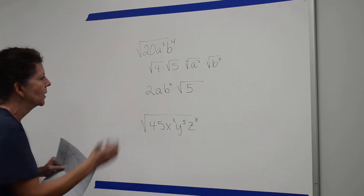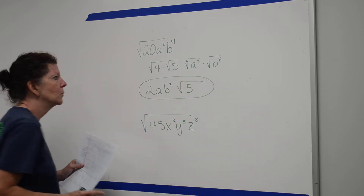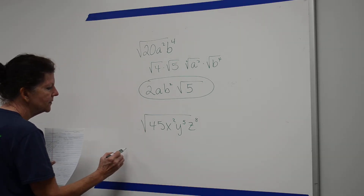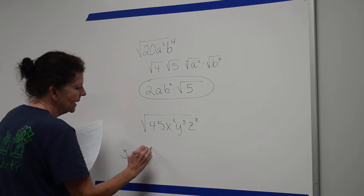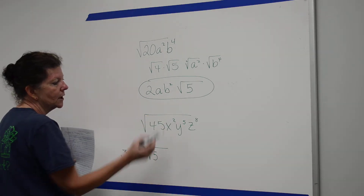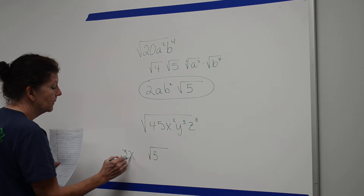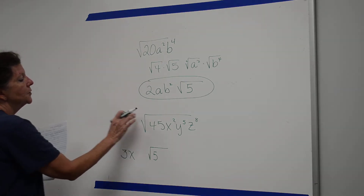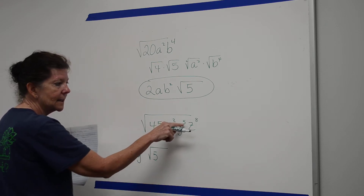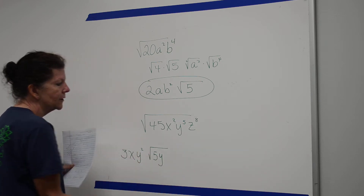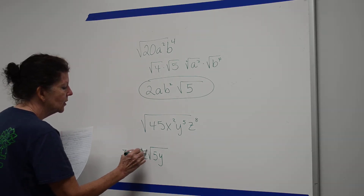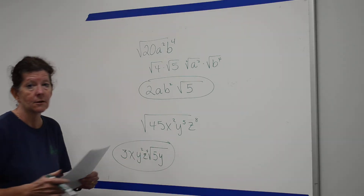Down here, I can look at this as the square root of 9 times 5. The square root of 9 is 3; I can't simplify the square root of 5, so I leave it underneath. For x squared, 2 times 1 equals 2. For y to the 5th, I have y squared outside but still a y underneath. For z to the 8th, 2 times 4 gives z to the 4th power. That's the final answer.